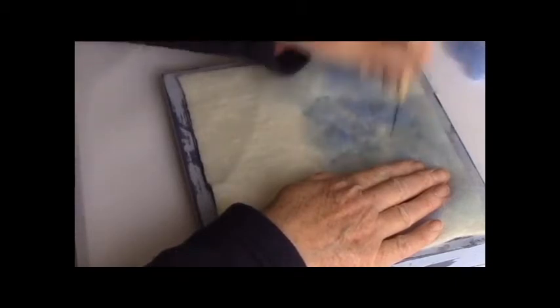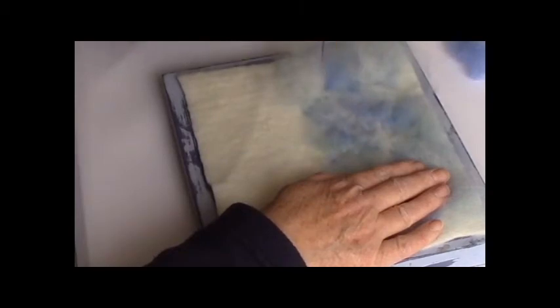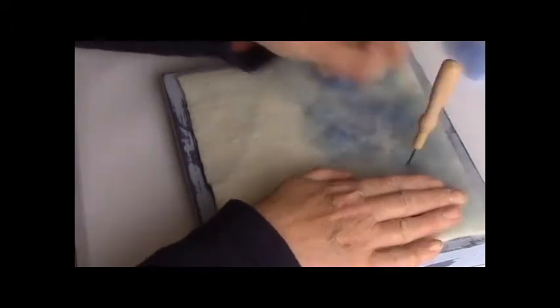Start to poke the needle into the felting base which allows you to secure the felt. Don't over needle felt it. It's not necessary because it's going in a picture frame. So just enough to hold it securely.